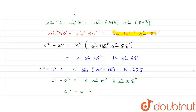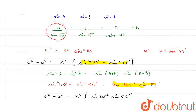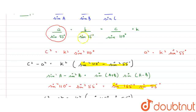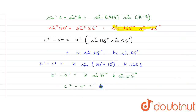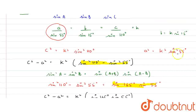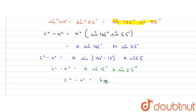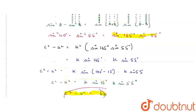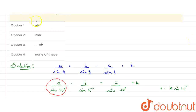C squared minus A squared equals K sine 15 degrees times K sine 55 degrees. The value of b is K sine 15 degrees, and K sine 55 degrees is the value of a. So C squared minus A squared equals B times A, which is BA. Matching with the options, BA or AB are the same, so option 1 is the correct answer.